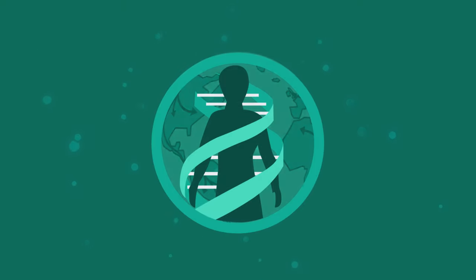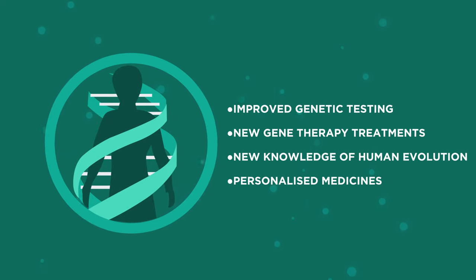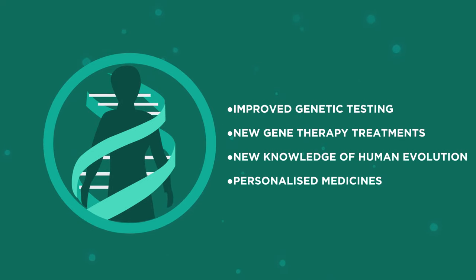All the data generated by the Human Genome Project is available to anyone to view free of charge online, which means that scientists around the world can use the information in their research. This helps to increase the number of uses for it.